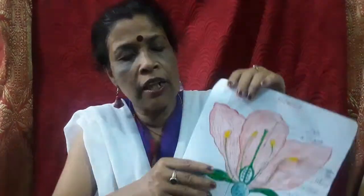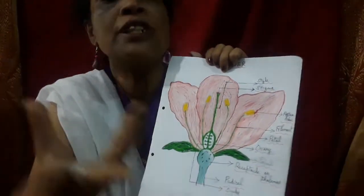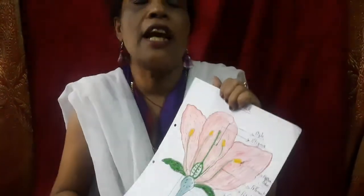Nectaries are nectar-secreting cells present at the base of the flower. They produce nectar which attracts insects and birds such as honeybees. These visitors come to suck the nectar and in doing so help in pollination.